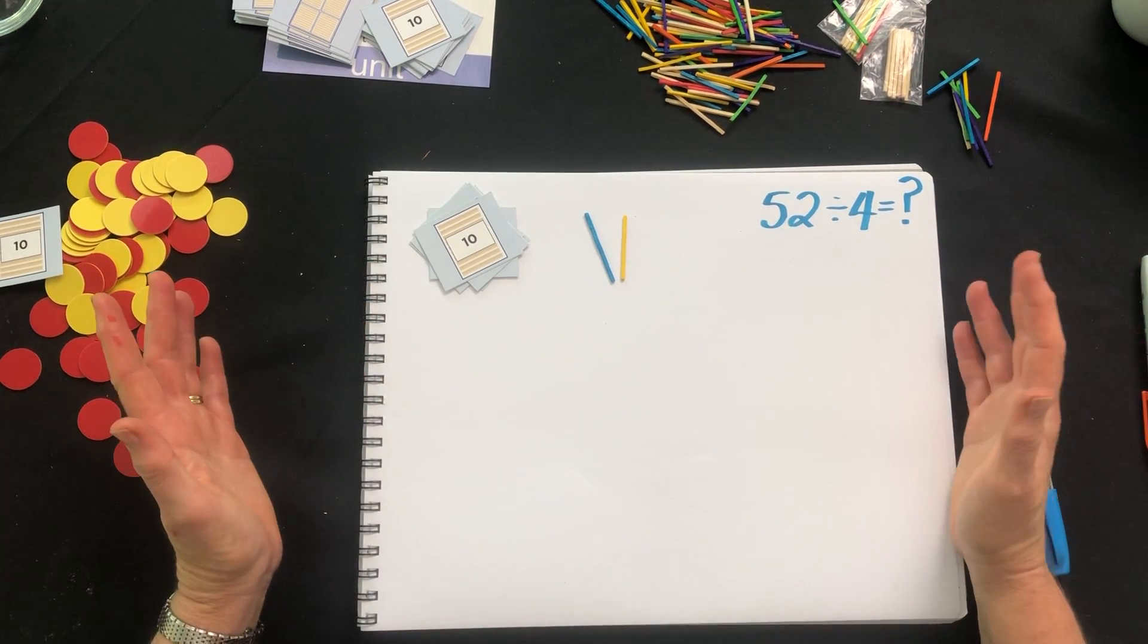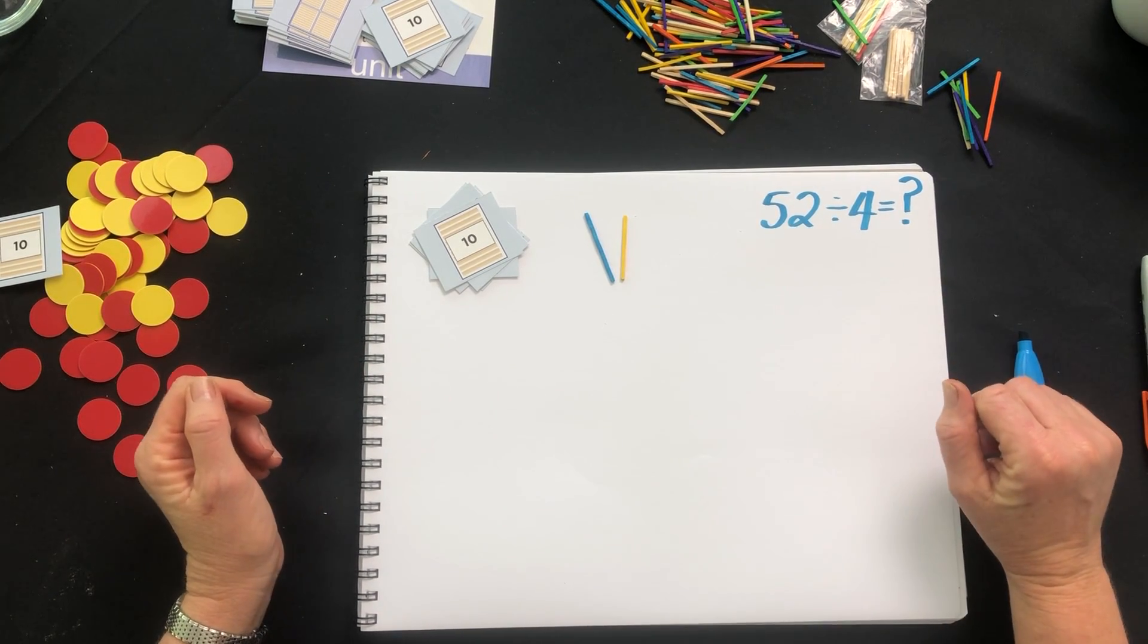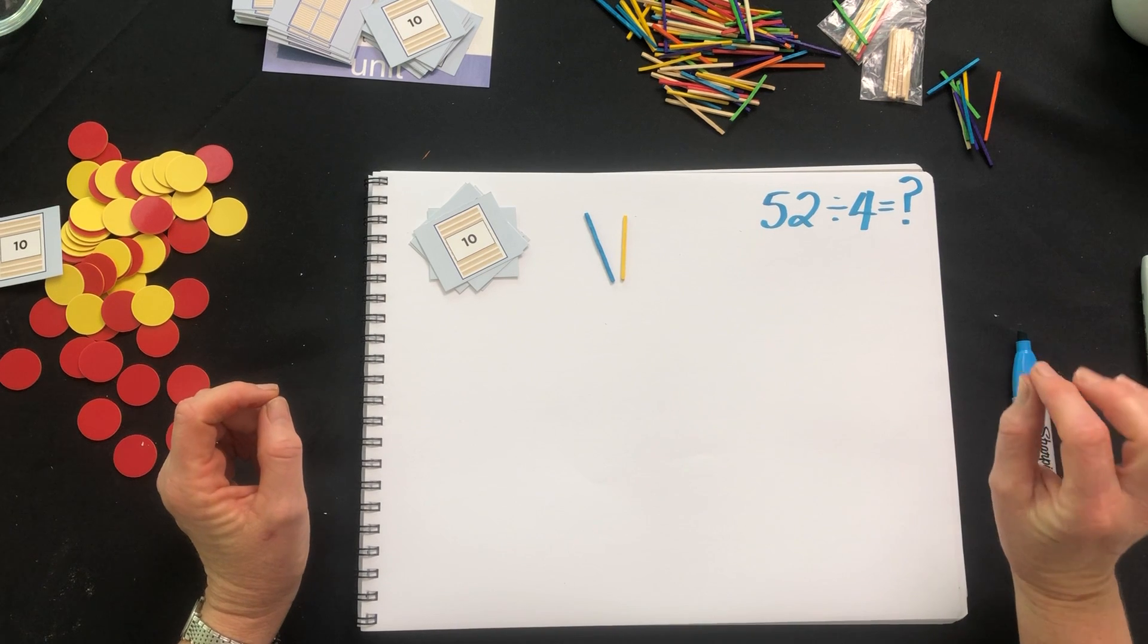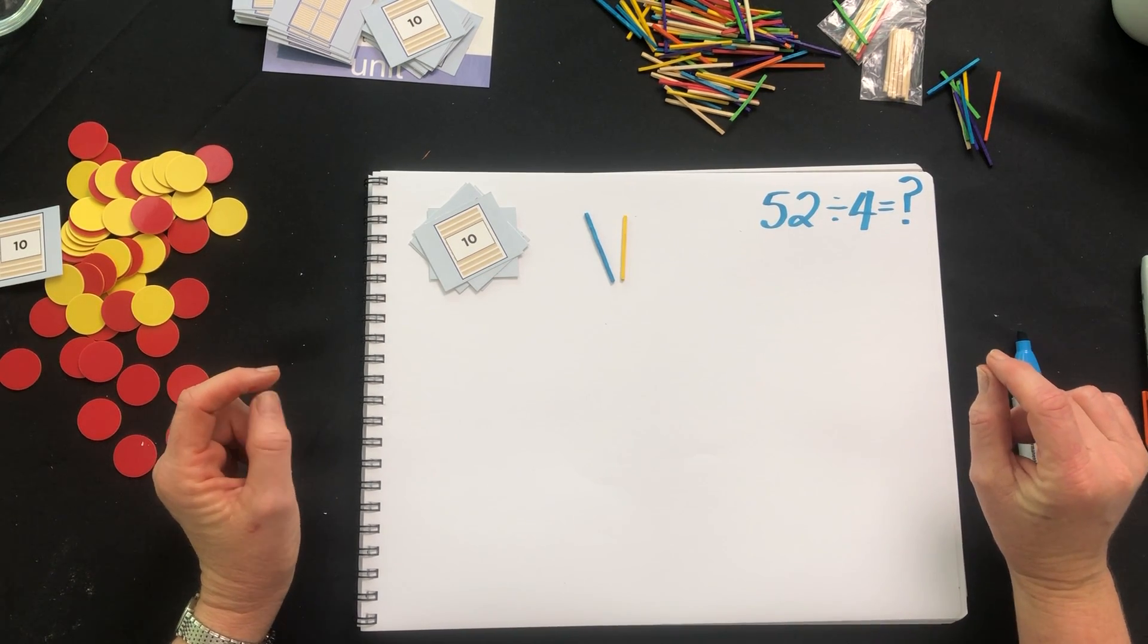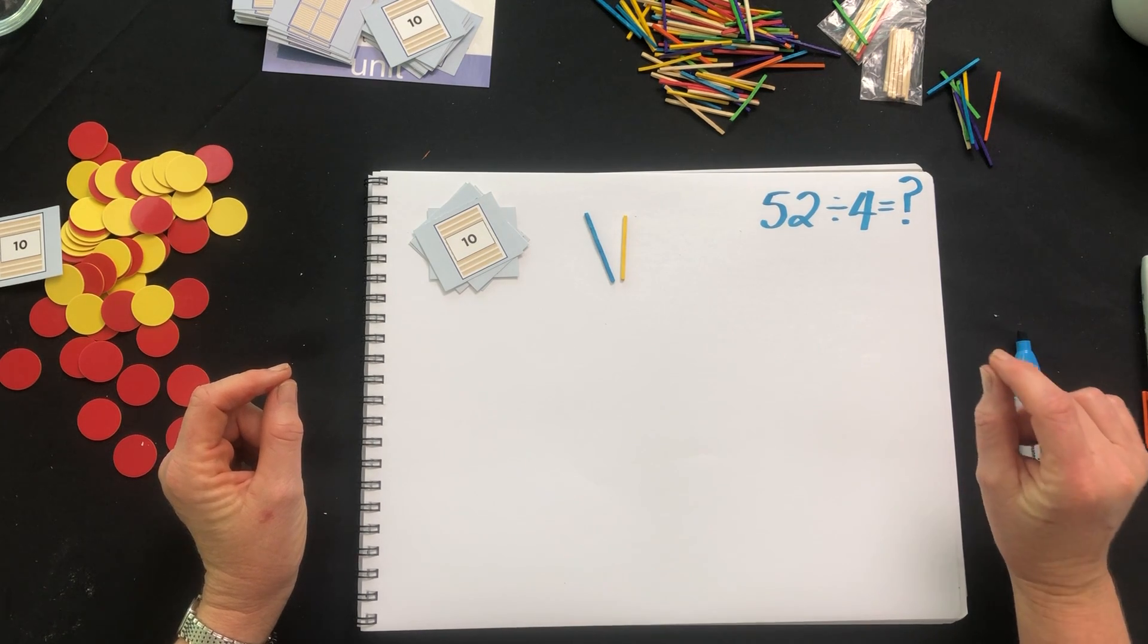The Australian curriculum requires students to learn written methods for solving problems like 52 divided by 4. It doesn't stipulate which method. The really important part here is for students to understand what they are doing.